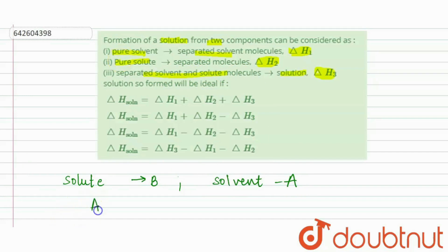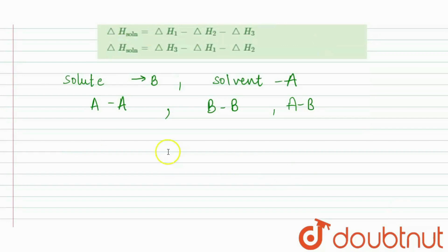So the first case will be A interactions, second case will be B interactions, and third case will be A interactions. They have told that in the first case the delta enthalpy is delta H1. In the second case it is delta H2, and in the third case it is delta H3.